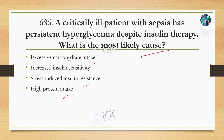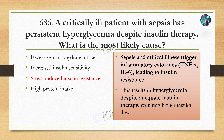The correct option is C: stress-induced insulin resistance. In sepsis and critical illness, inflammatory cytokines — TNF-alpha and IL-6 (interleukin-6) — lead to insulin resistance, causing hyperglycemia despite adequate insulin therapy and requiring higher doses of insulin in such cases.